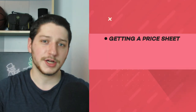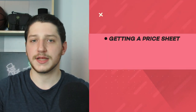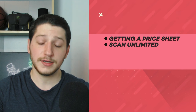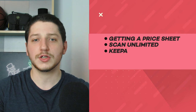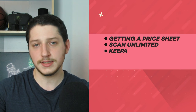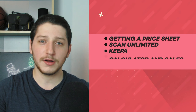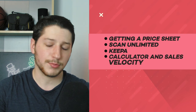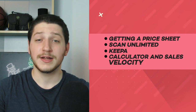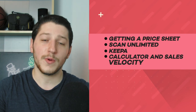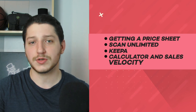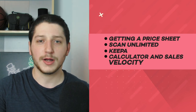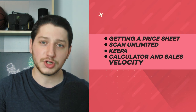For this product research method there are going to be four main points. First, we're going to need to get a price sheet from our supplier. Next, we're going to use a scanning software to scan that sheet. After that, we're going to use Keepa, a very in-depth and powerful tool for further analysis. Last, we're going to use a calculator to determine our exact profit, as well as Jungle Scout to see sales velocity and how many units are selling each day.